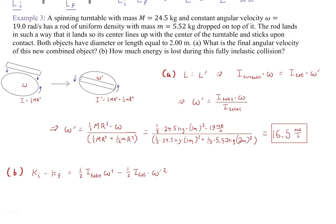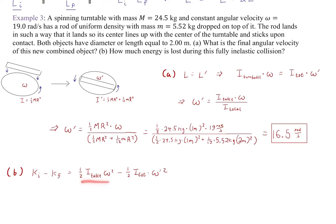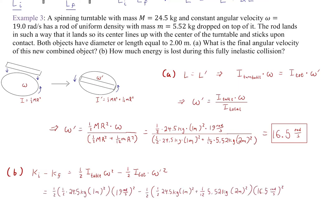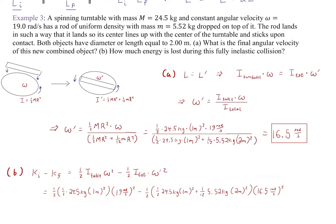The energy lost in this perfectly inelastic collision is K_initial − K_final = ½I*omega² − ½I_total*omega'². Plugging in all numbers gives 289 joules of energy lost. Energy is always lost in inelastic collisions, and even for these moderately sized objects (a 24 kg turntable), the loss is significant.